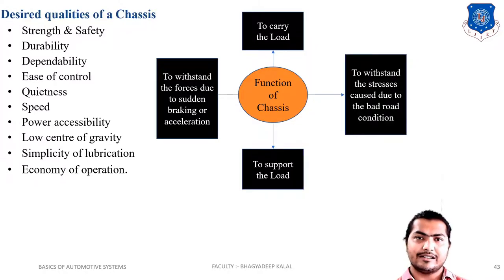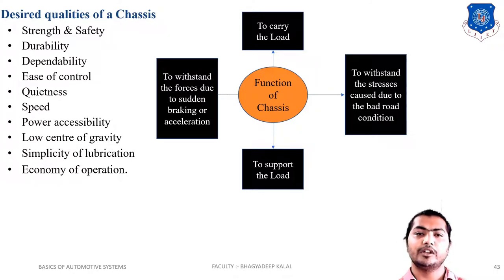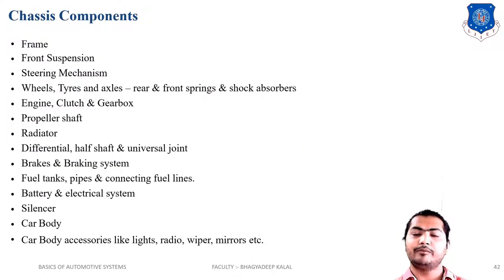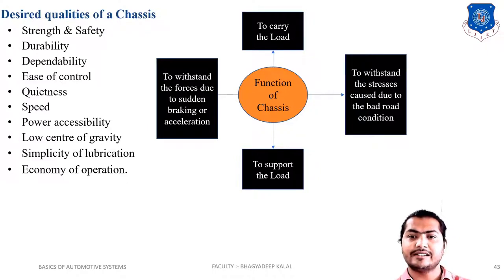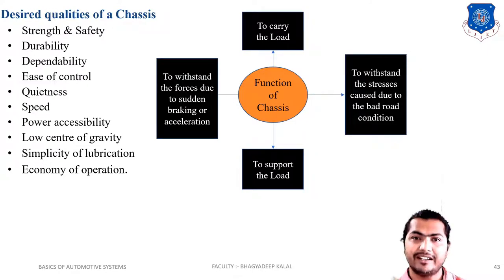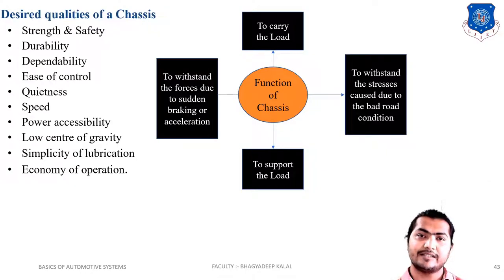Now the question arises: what is the function of the chassis? The first function is to carry the load — including the front suspension system, gearbox, rear suspension system, and wheel-tyre assembly. The next function is to withstand stresses caused due to bad road conditions, like bending stress on the vehicle. Different types of stresses come on the chassis, which is why the strength of the chassis must be very high.